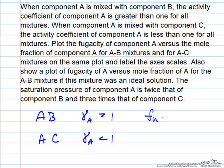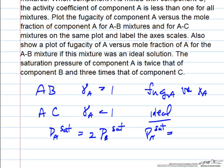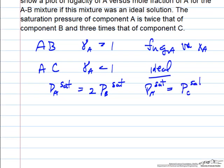It wants us to plot fugacity of A versus mole fraction of A for both mixtures and label the axes. Also, if we were to have an ideal solution, we would like to see how the fugacity would change. We're told that P_A^sat equals twice P_B^sat and P_A^sat equals 3 times P_C^sat.